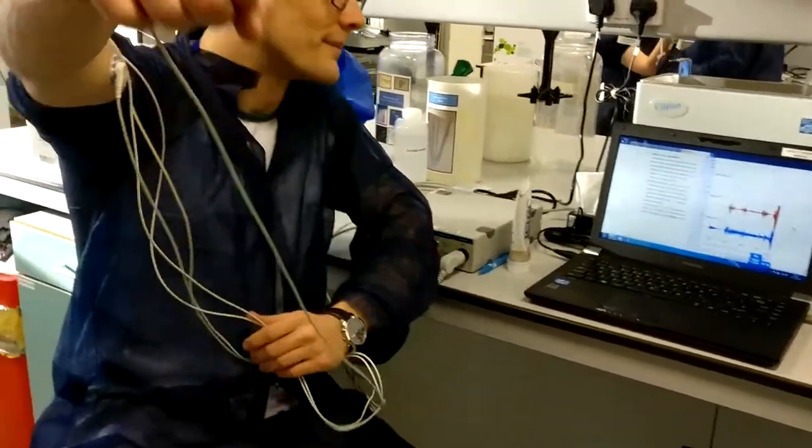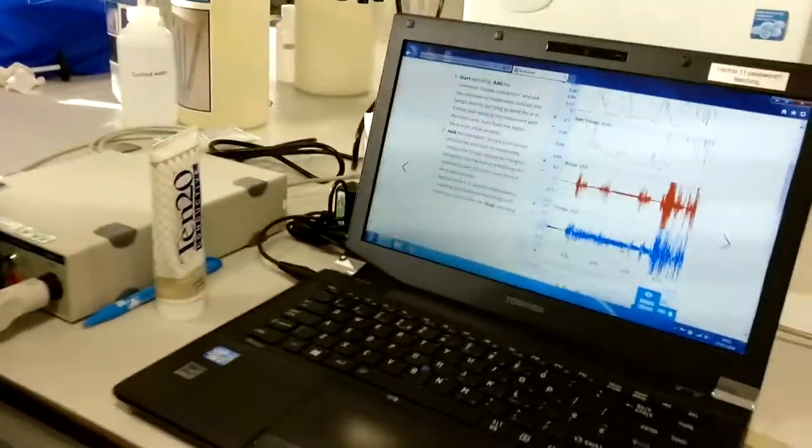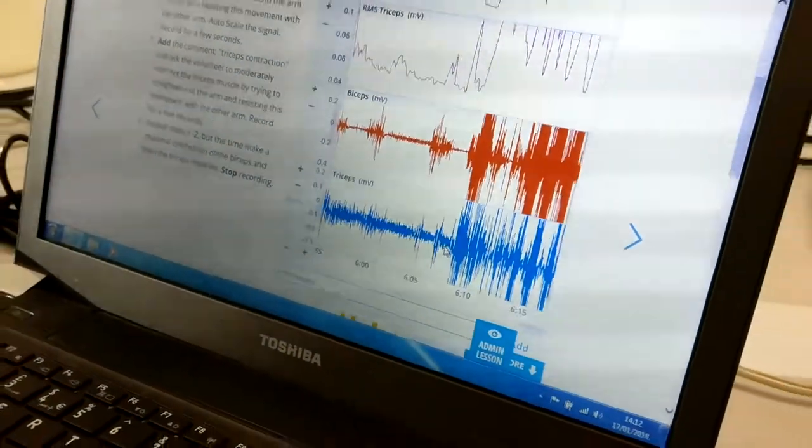Basically whenever Tom tenses his biceps or does something with his arm, you can see a corresponding jump on the biceps and triceps meter.